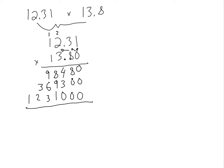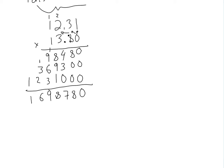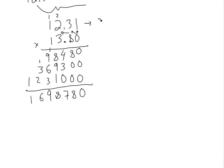Then we just add these up — as I showed in my addition and subtraction video. We get zero here, eight here, this is going to be seven, this one is 18 so we carry one, this is one, this is 10 plus six plus three is 19 so we carry one, and this increments to give us six, then one. Since there are two decimal places in each number, we multiply together to get four decimal places total, so we place the decimal on the fourth spot from the right.